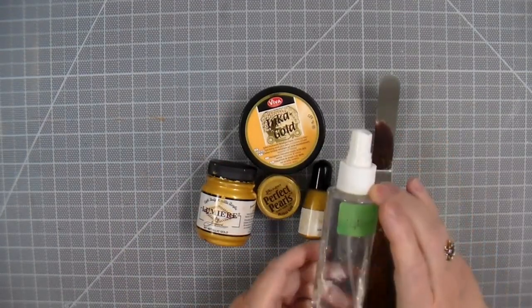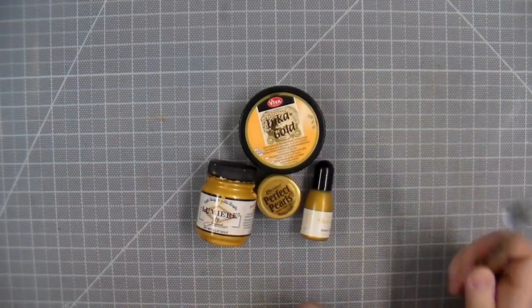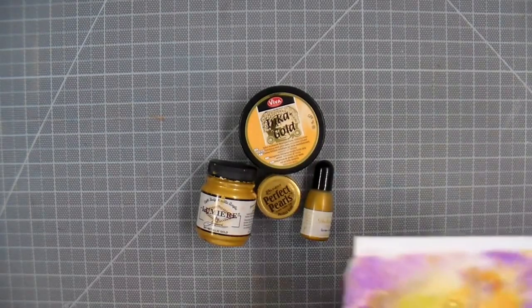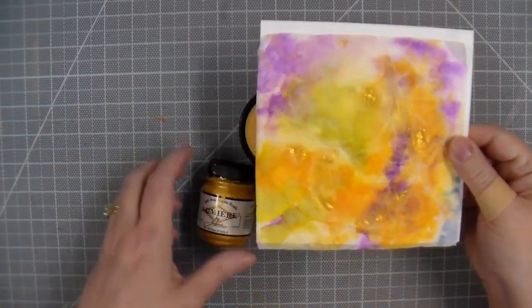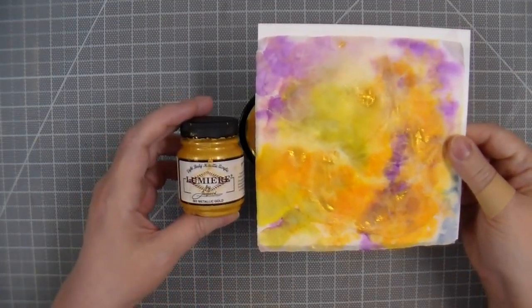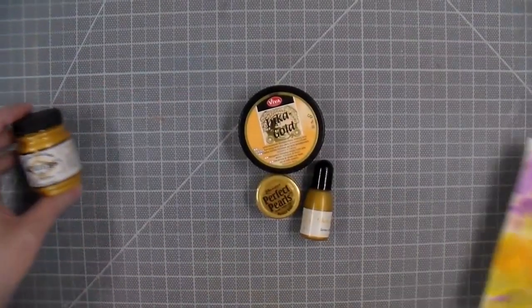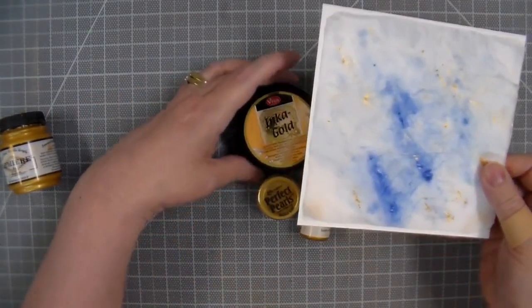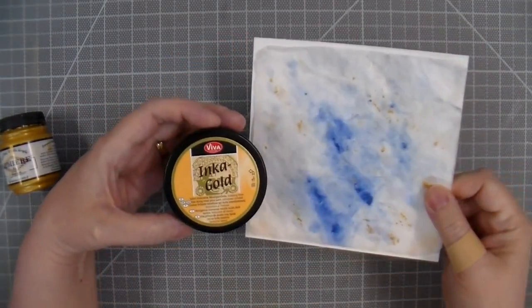As I said, you can always do a second layer or third layer on the tissue paper. So I just want to show you the different golds I've used. Now this one is Lumiere acrylic paint. It creates beautiful gold shimmer. This one is Inca Gold. They're all a little different, but they all create a beautiful gold shimmer.